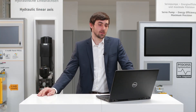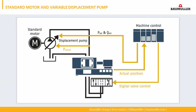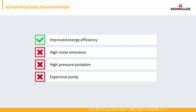The next system is a combination of a standard induction motor with a variable displacement pump, typically a piston pump. The motor speed is constant here too, but a big difference is the variable displacement pump. The pressure and flow command goes directly to the pump, and by changing the displacement volume, pressure and volume control is realized. Position control and valve switching is done by the overlaid machine control. Here we have improved energy consumption, but there are still disadvantages: high noise emission, high pressure pulsation and an expensive pump.